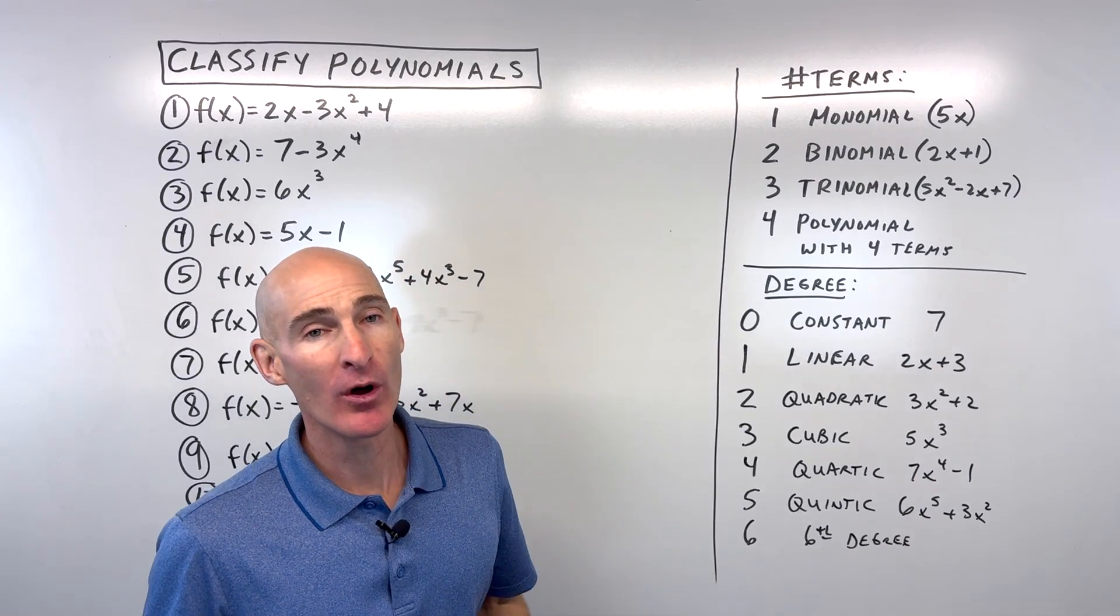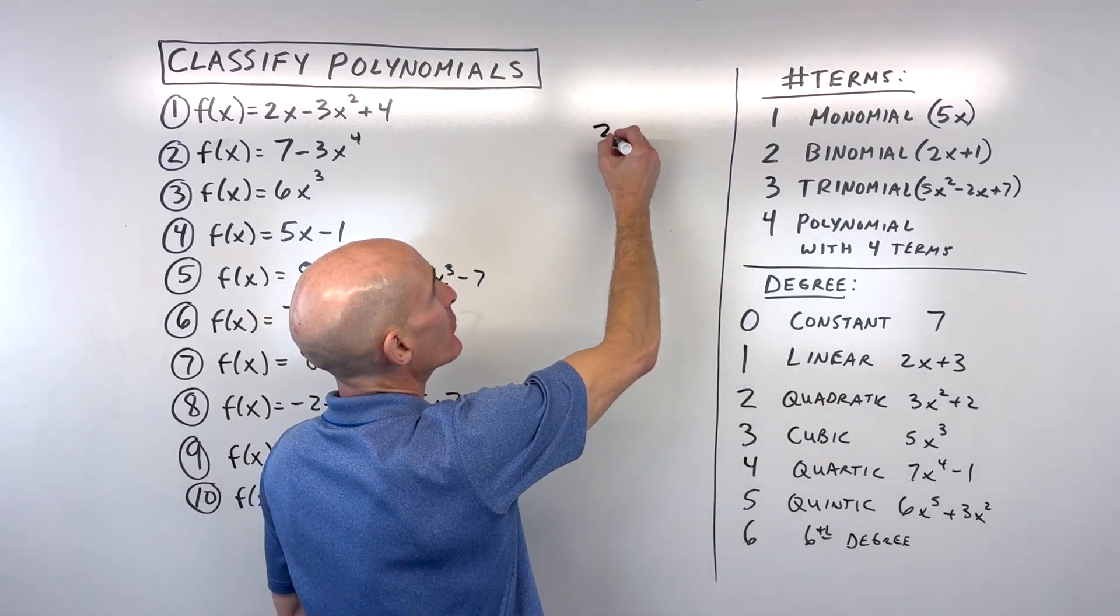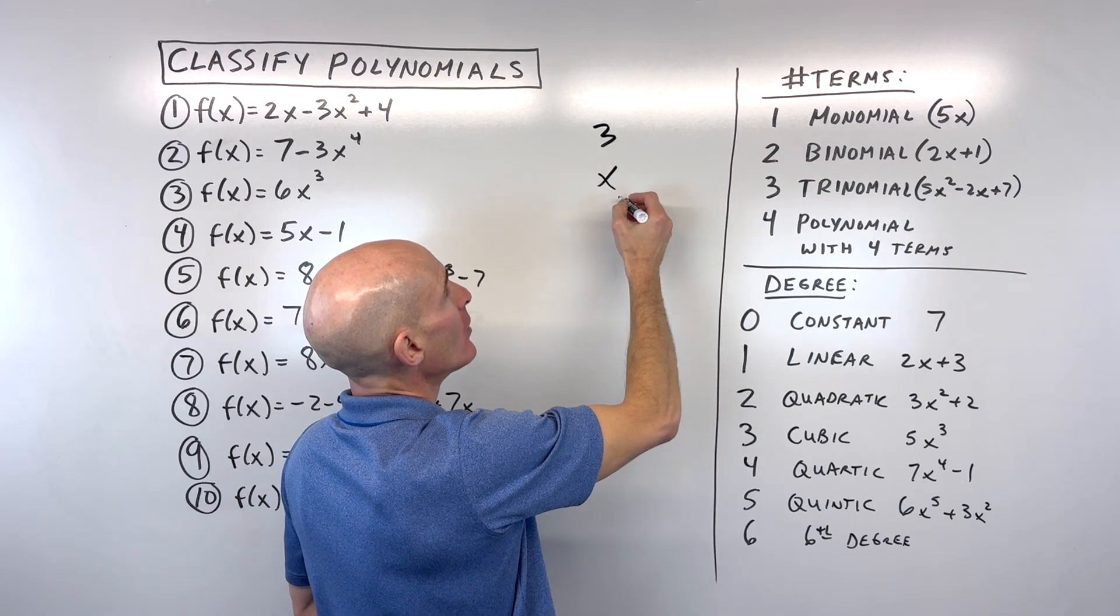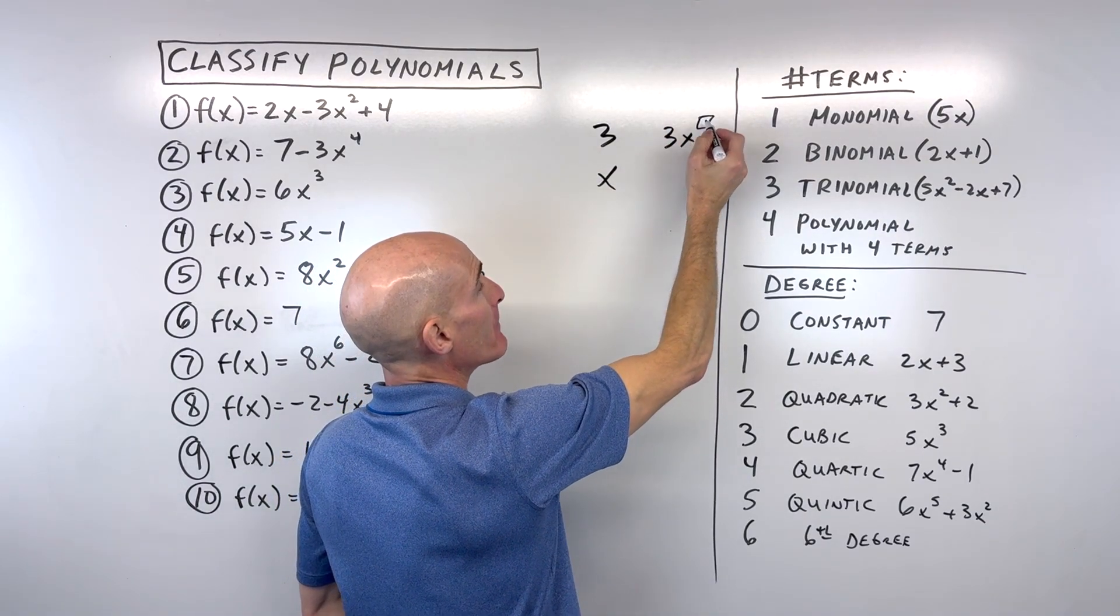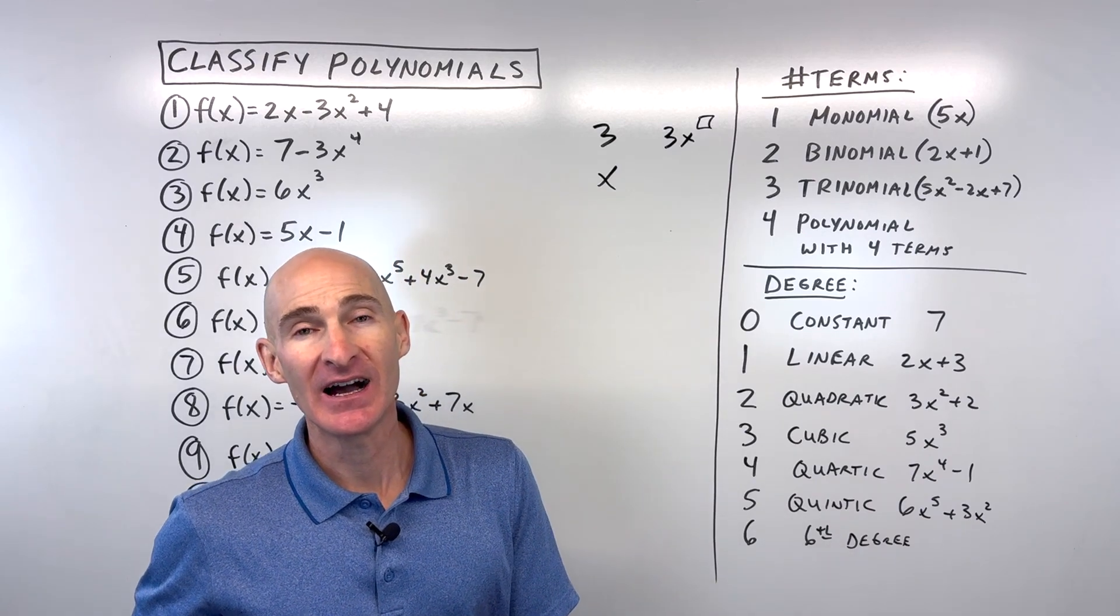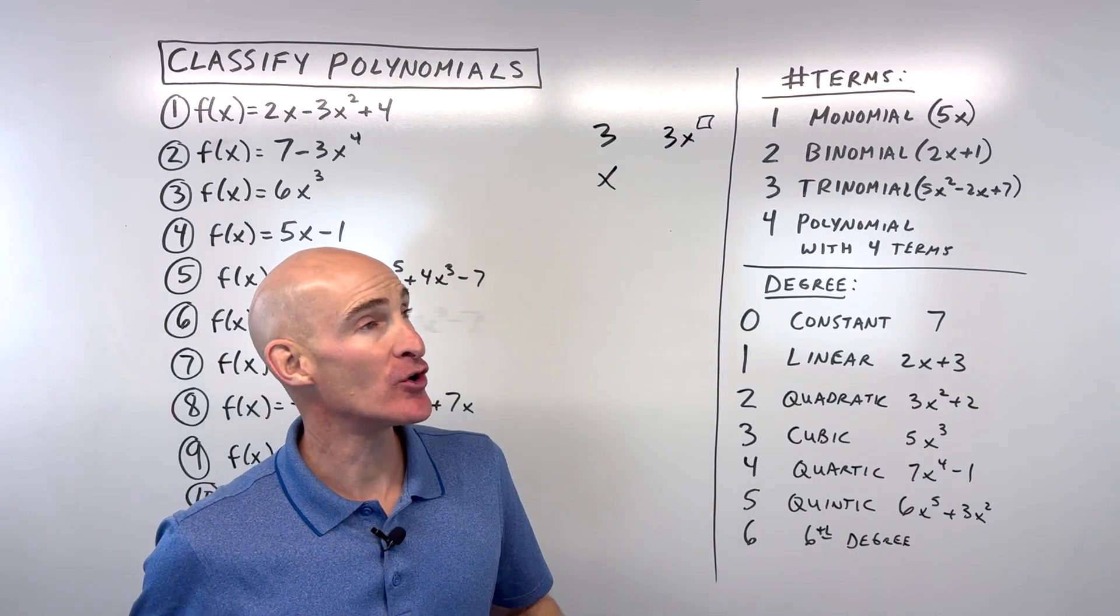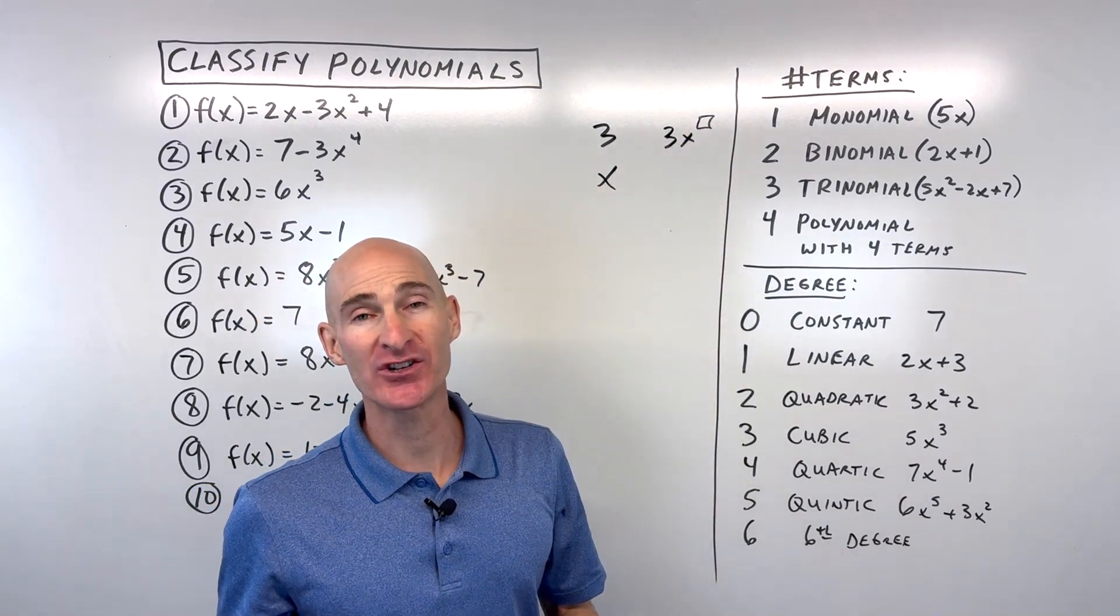What's a monomial? A monomial is basically a number or a variable or a product of a number and a variable to a positive integer exponent. So you don't want to have negative exponents or fractional exponents.